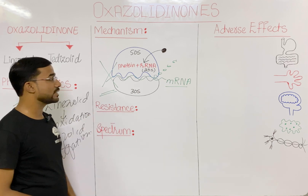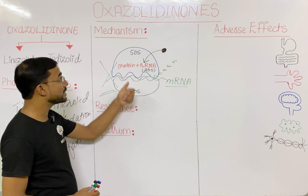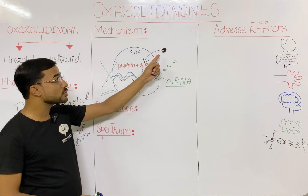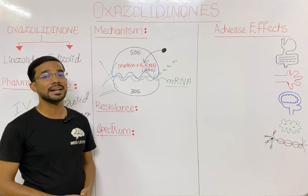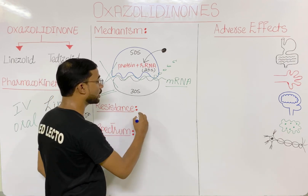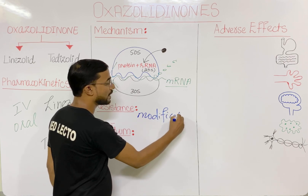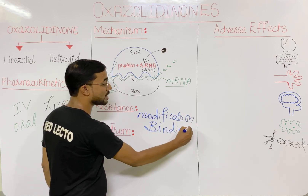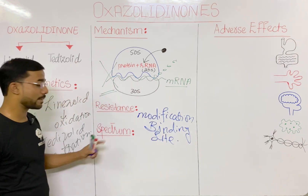Regarding resistance, if bacteria develop a modification in the 50S ribosomal subunit, the oxazolidinone cannot bind to it. When there is no binding, there is no antibiotic effect. This alteration or modification of the binding site is the resistance mechanism of bacteria against oxazolidinones.